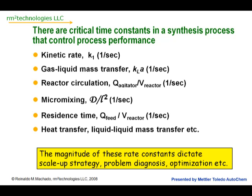We also have micromixing, which occurs at the scale of turbulence, and it's the diffusion divided by the micromixing length scale. There's also a residence time and a host of other mass transfer and liquid mass transfer time constants. The magnitude of these rate constants dictates scale-up strategy, problem diagnosis, and optimization.